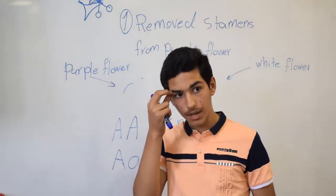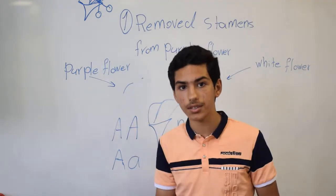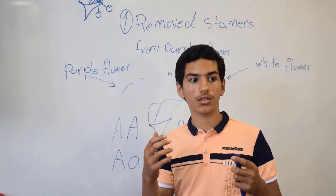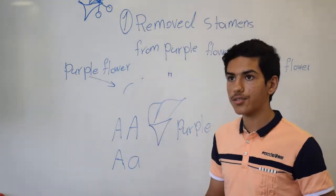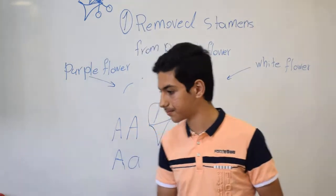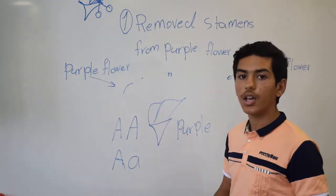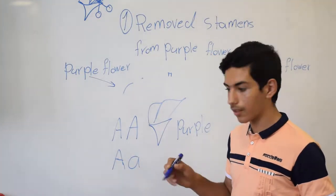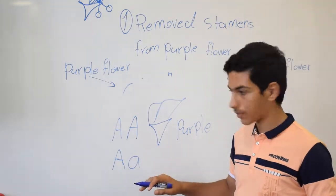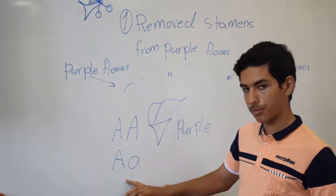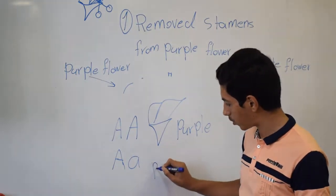Because we have a dominant allele in this genotype and the dominant allele does not have any problems, the few problems from the recessive allele do not show. For example, a person might carry a recessive allele for conditions like deafness or blindness, but because the dominant allele is present, the genotype is considered dominant. This gives a purple phenotype.